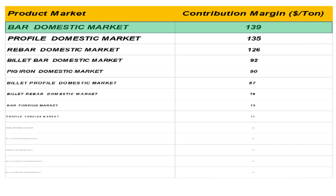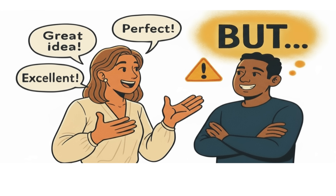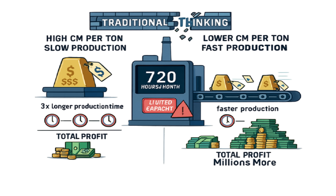$139 a ton — if I'm a sales manager, that's my star product. On a per-unit profit basis, it looks like the clear winner. You'd think just make more of that. But focusing only on CM per ton can be a bit of a statistical decoy if your factory has limits — limits like how much the machines can actually produce. It ignores the speed of production.